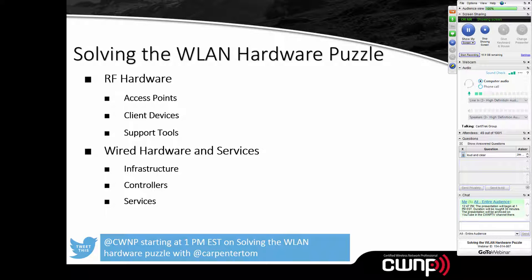As we talk about solving the wireless LAN hardware puzzle, there are really two angles: the RF hardware, and the wired hardware and services — the supporting hardware and services — and then the actual RF hardware itself, the hardware that has the ability to transmit and receive radio frequency signals. My name is Tom Carpenter, and I'm the CTO here at CWNP.